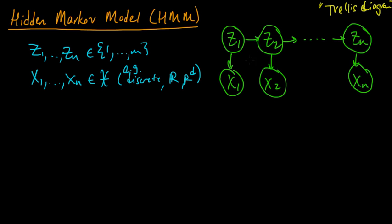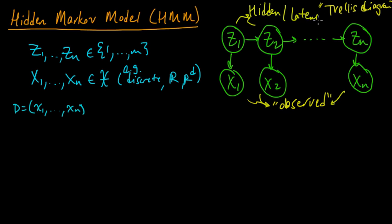The X's here are observed random variables. Usually the setup is that we observe all of the X's, so you observe these X's, this is like your data. And the Z's are the hidden or latent variables. So this is the hidden part.